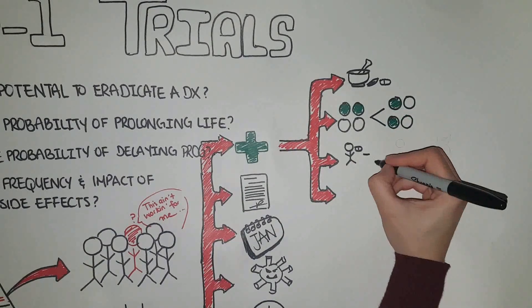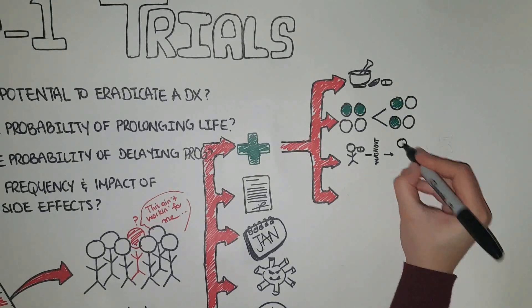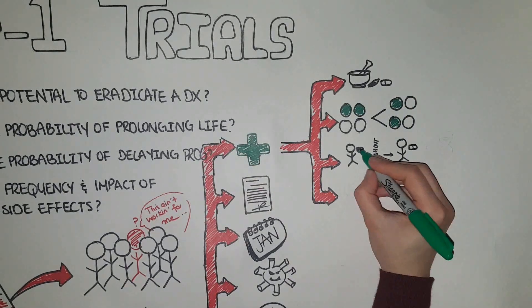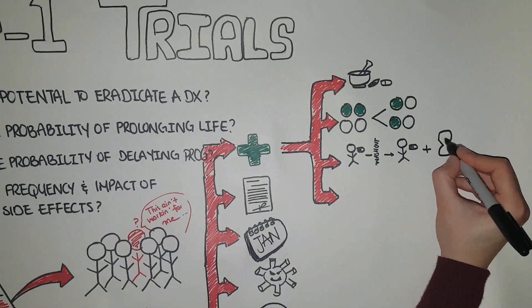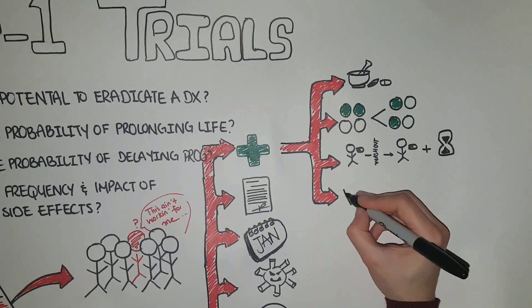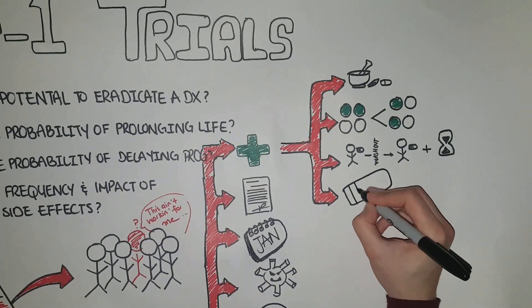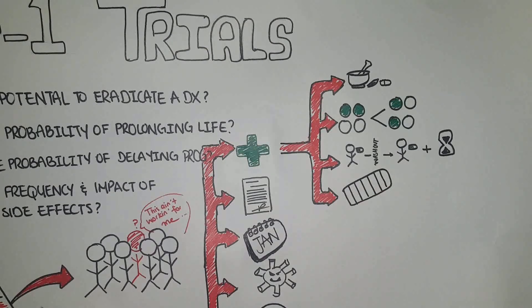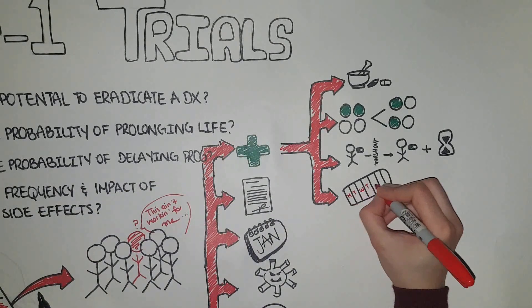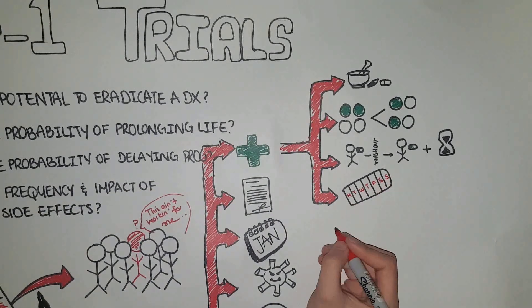Additionally, pharmacists can be extremely helpful in planning the design of the trial, specifically the washout period and the duration of the trial. Lastly, they are involved in assessing patient compliance through pill counting and analyzing serum blood levels at the end of each treatment period.